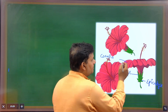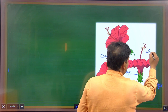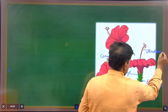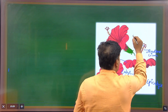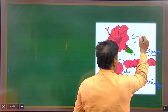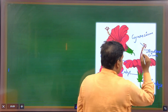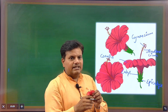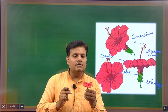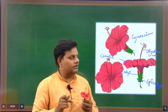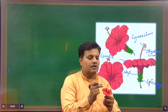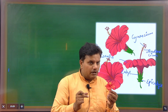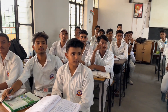And then Androecium, and last is Gynoecium. It is a bisexual flower, meaning it has both male and female sex organs. Androecium is the male sex part of the flower, and it has pollen. Gynoecium is the female sex part of the flower.